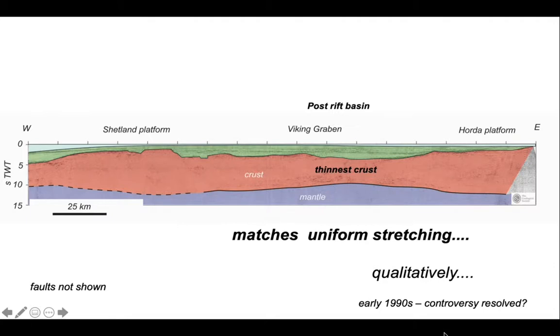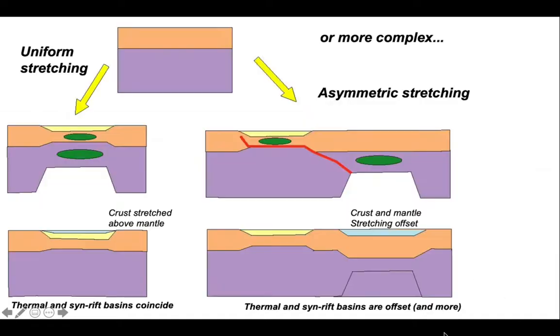Qualitatively, it looks like the uniform stretching model is appropriate. So it appeared as we moved into the 1990s that uniform stretching was the state of play for intracontinental basins like the North Sea, and it seemed like the controversy was resolved. From that standpoint, we can explain basins through the uniform stretching model, and there's no particular need to invoke more complicated models. But this was just a simple qualitative examination.